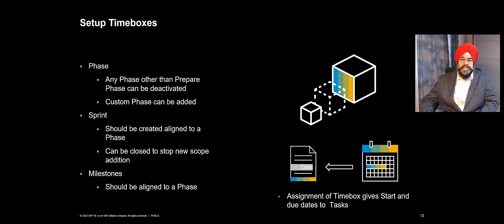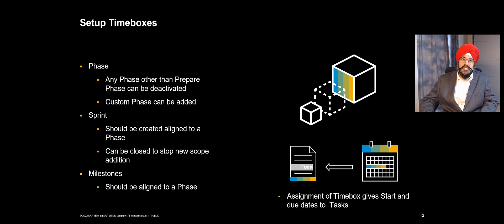Then let's talk about setting up the time boxes. Time boxes include your phases, sprints, and milestones, and each one has a different purpose. You get a predefined phase list from SAP Activate methodology but you can easily extend it by adding a custom phase. In case your project is about a specific time frame — for example, you are only in the realize phase — you may also want to deactivate the existing phases. That can be done easily via a UI option.